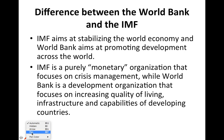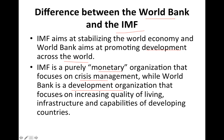People sometimes get confused about the difference between the World Bank and the IMF. It is very simple: the IMF aims at stabilizing the world economy, while the World Bank aims at promoting development across the world. The IMF acts like a central bank — if something goes wrong it will stabilize the world economy through SDRs, monetary policy changes, and financial plans. The World Bank has a very different aim: it helps in development and reducing poverty by building infrastructure and starting various programs. So the IMF is a purely monetary organization focused on crisis management, while the World Bank is a development organization focused on improving quality of living and capabilities of developing countries.